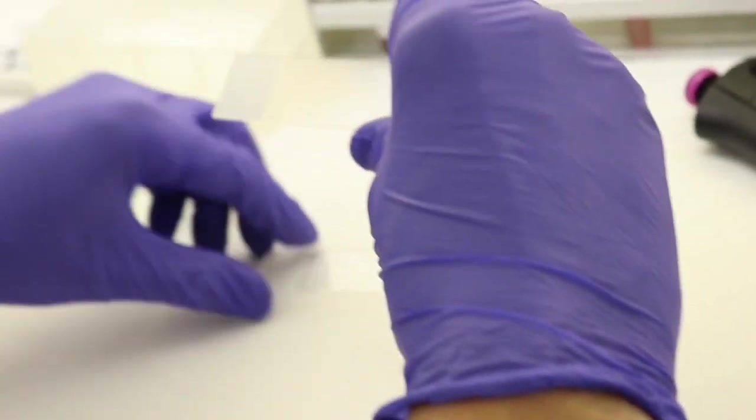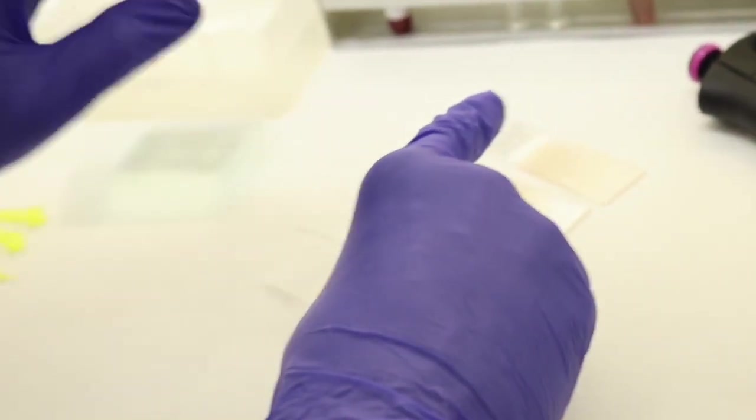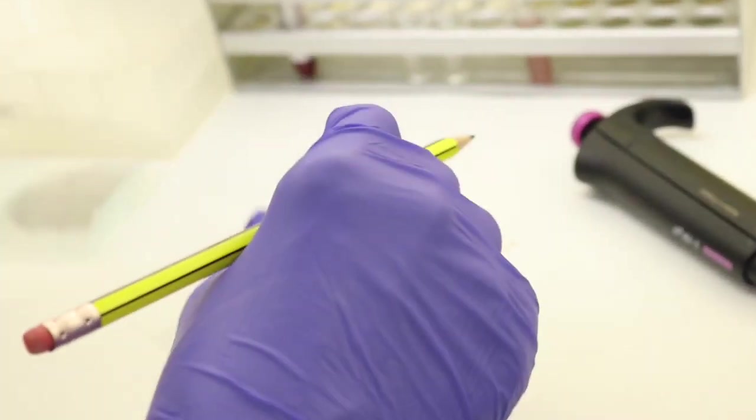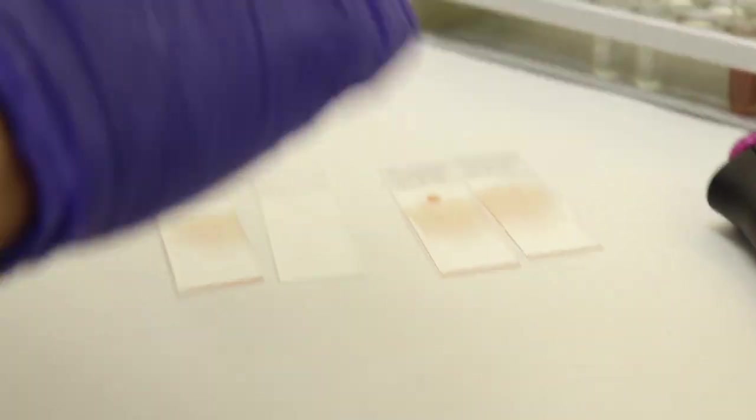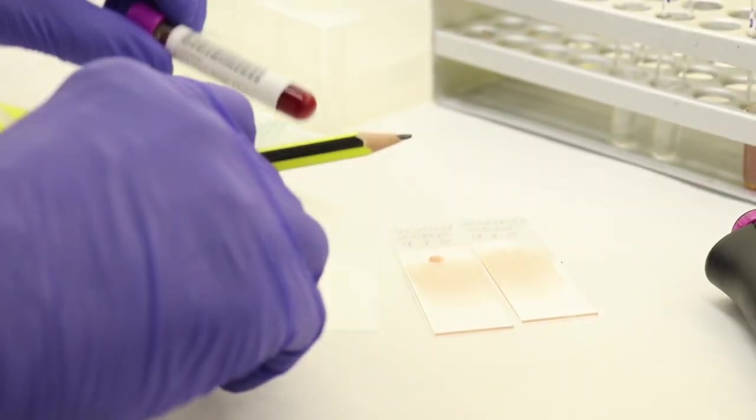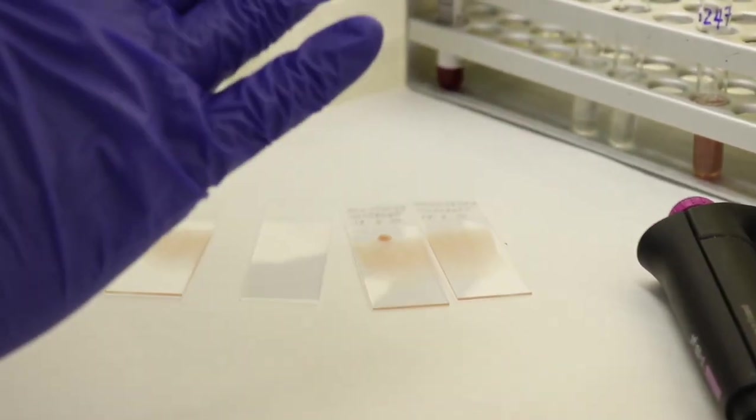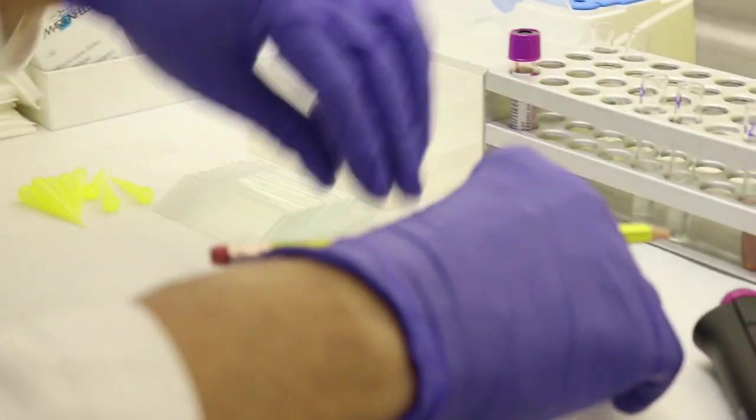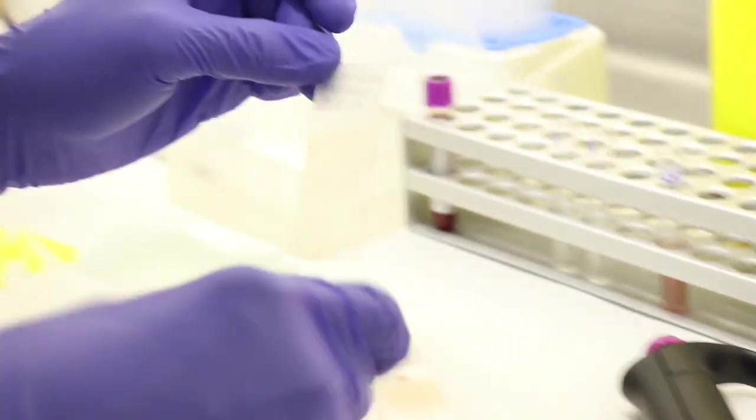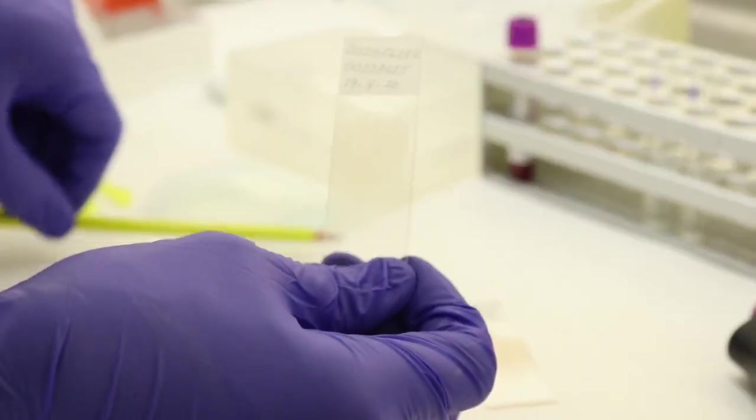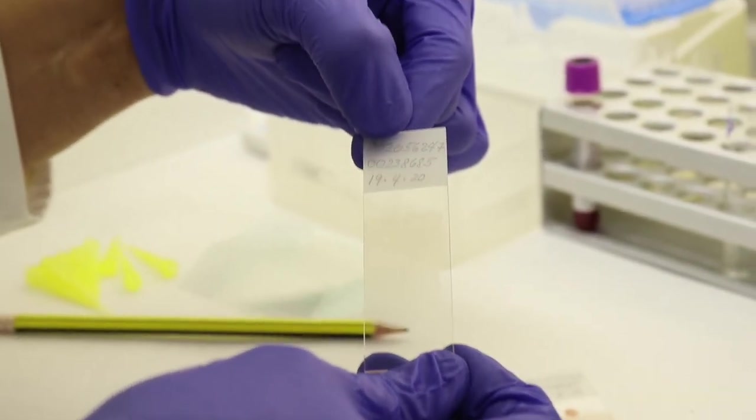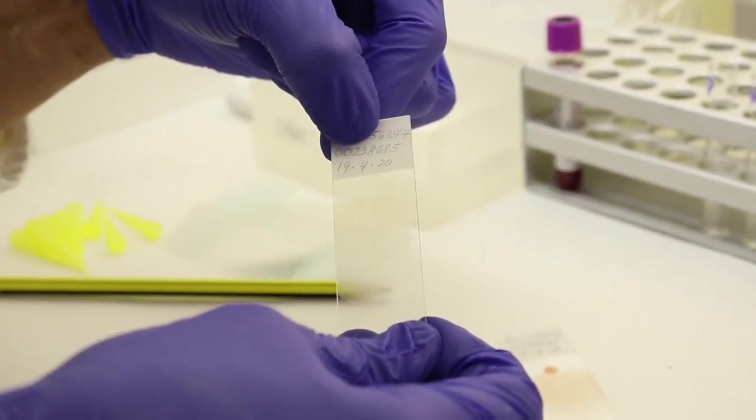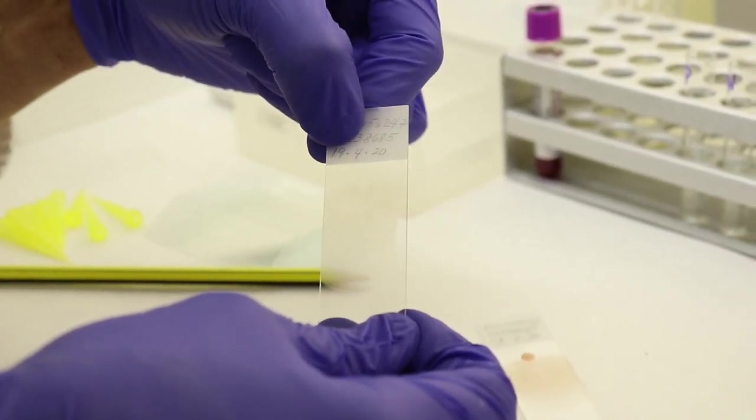The last step in making a blood film is to label them. Don't pre-label your slide because there's a high chance you might mislabel them, especially when dealing with multiple samples. Label them according to the tube of your patient sample. It contains the barcode of the sample, the medical record number of the patient, which is unique for each patient, and the date when you made the blood film.